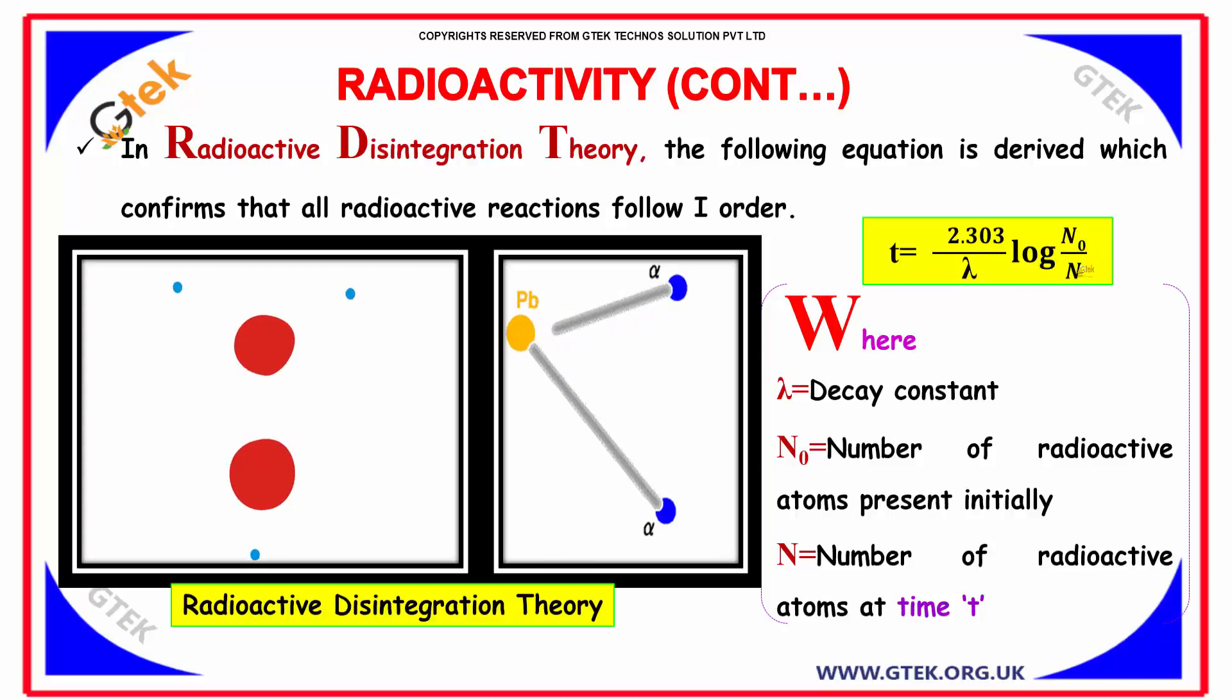Where lambda is the decay constant, N0 is the number of radioactive atoms present initially, and N is the number of radioactive elements after time t.